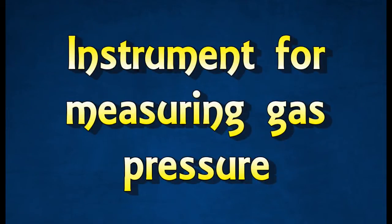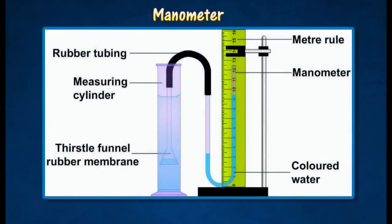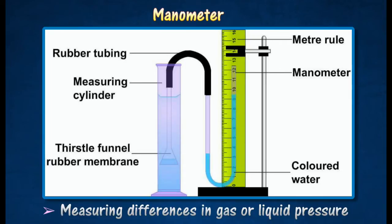Instrument for measuring gas pressure. A manometer consists of a U-tube containing a liquid such as mercury or water. It is usually used for measuring differences in gas or liquid pressure.